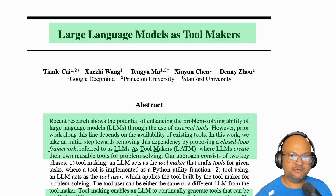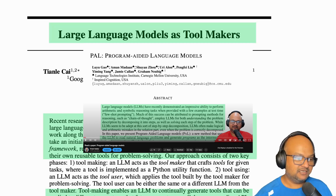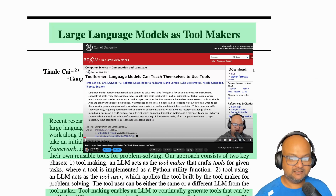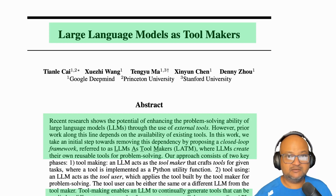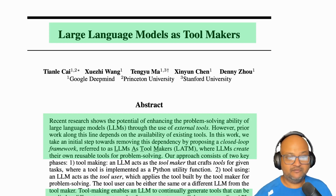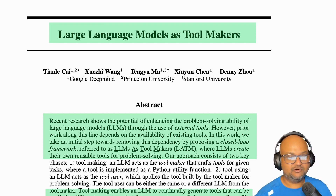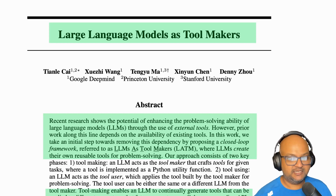Hi folks, welcome back. I hope you're all doing well. In a few previous videos on this channel we've seen how the availability of external tools can greatly help the problem-solving abilities of large language models. If you give them things like the ability to search the web, a calculator, or maybe a full language runtime like a Python interpreter, you can get them to solve much more complex problems than if you just depended on their pure language modeling abilities.